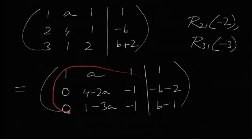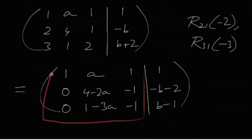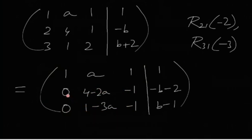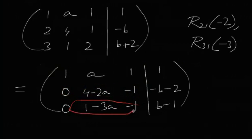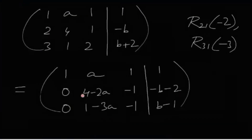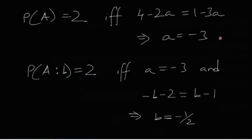Focusing first on just the A part of the reduced matrix: for rank of A to be less than 3, the second and third rows must be equal — or scalar multiples of one another. The first and third components of those rows are already the same (0 = 0, and -1 = -1). Therefore the second components must also match, giving 4 - 2a = 1 - 3, which means a = -3. So rank of A equals 2 if and only if a = -3.